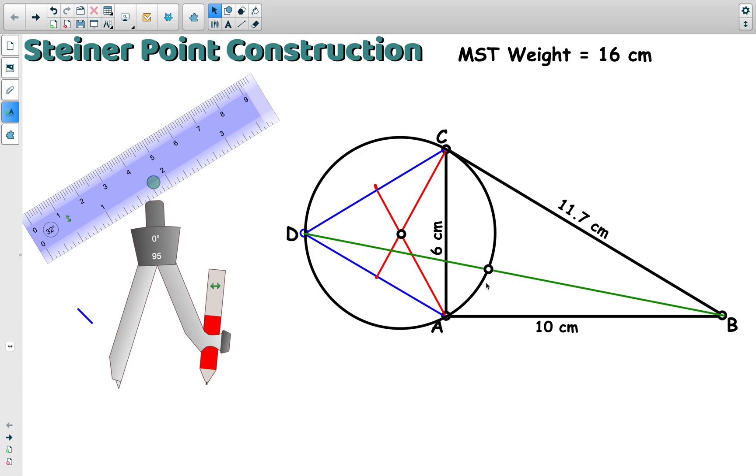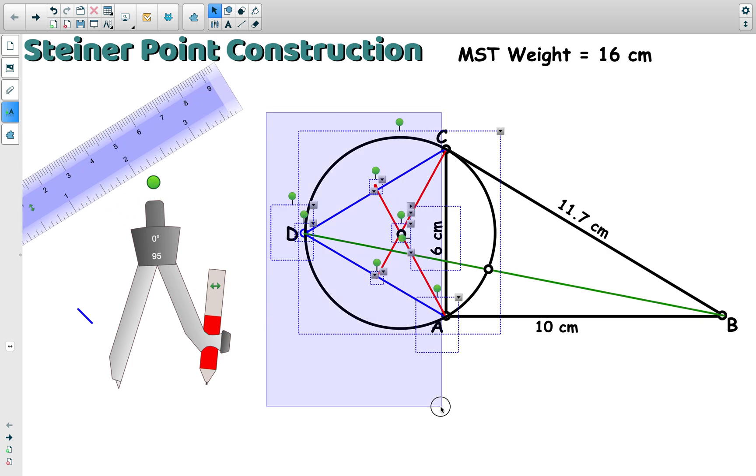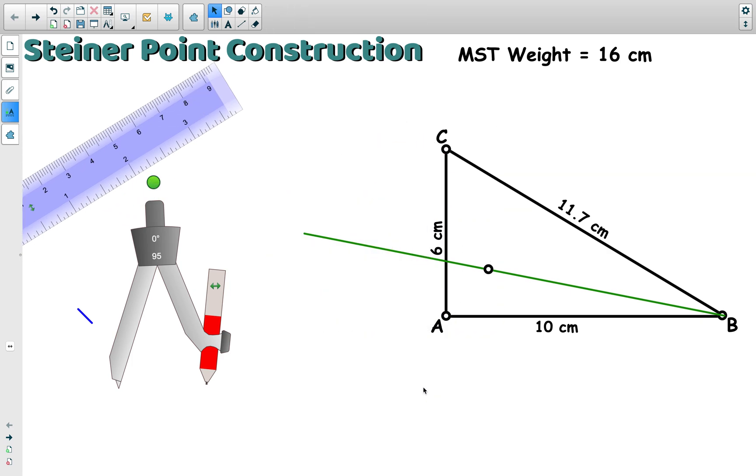So there's our Steiner point. Okay, now our next step is to connect the Steiner point to points C, A, and B. So before we do that, let's get rid of all of the other parts of the construction so that we'll have an easier view of our new network.